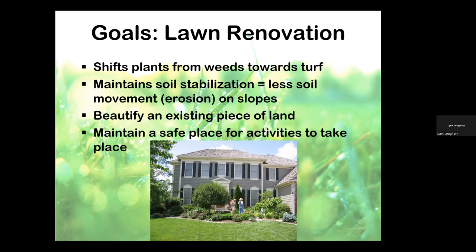When we're talking about lawn renovation goals, we want to beautify the land with turf and with perennial trees and shrubs. We also want to shift the area considered lawn from weeds to turf. On places with hills or slopes, turf helps stabilize the soil so you don't get erosion. And if you have children or grandchildren, you want to maintain a safe place for activities like soccer or tossing a ball, with a smooth lawn — no ruts, no holes, no bare spots.